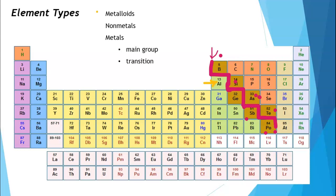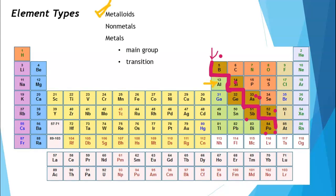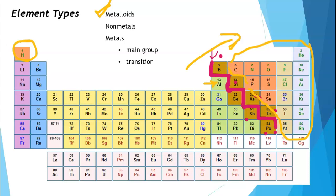Once you know where the metalloids are, it's very easy to find the non-metals. They are up and to the right of the metalloids on the periodic table. We also have to include hydrogen in our non-metal list — hydrogen goes over here with the non-metals.